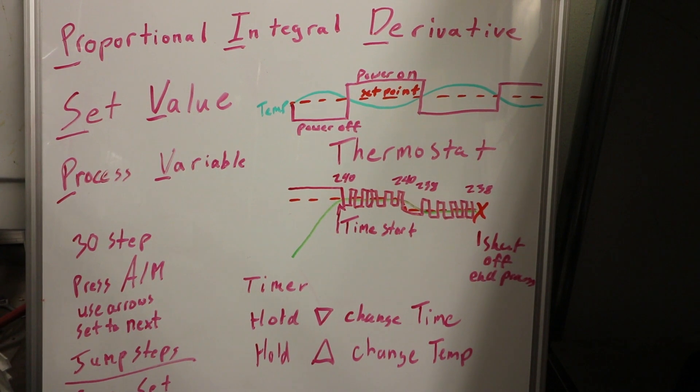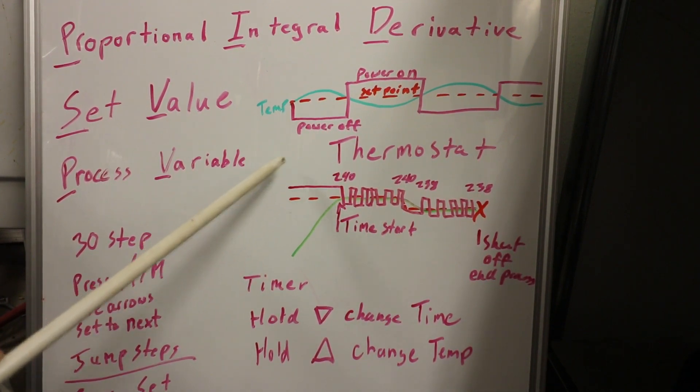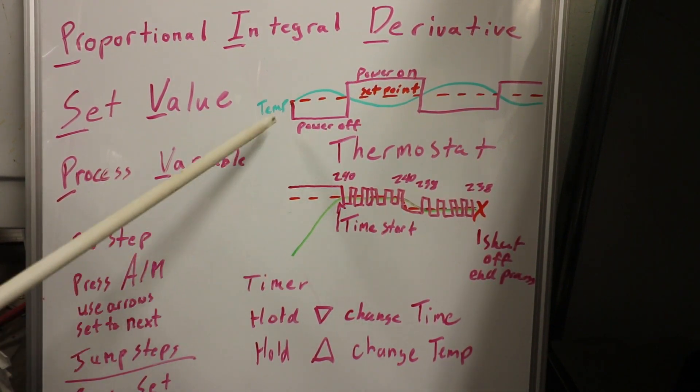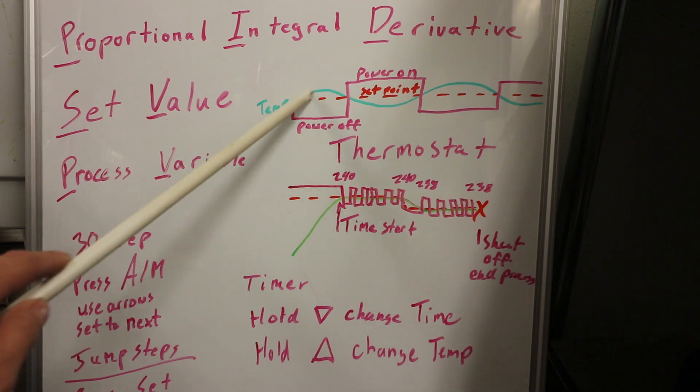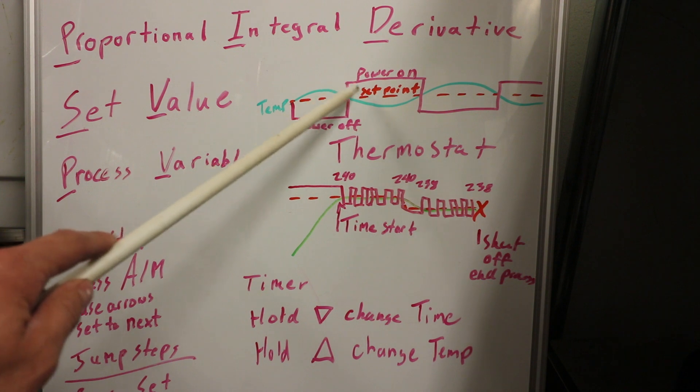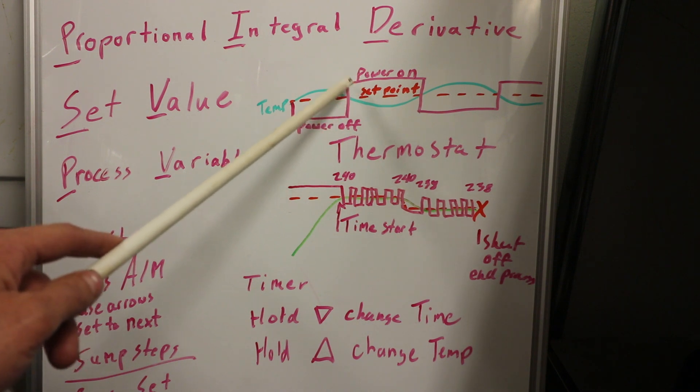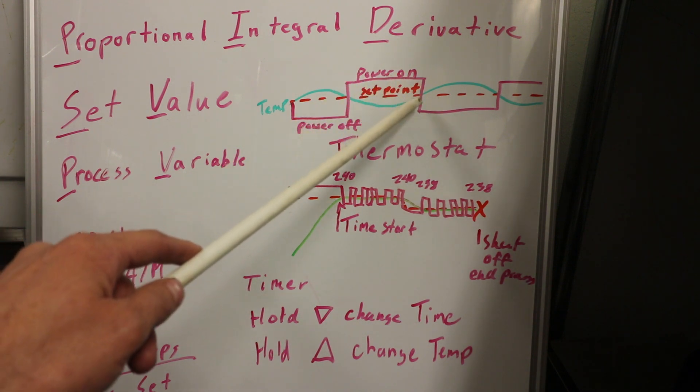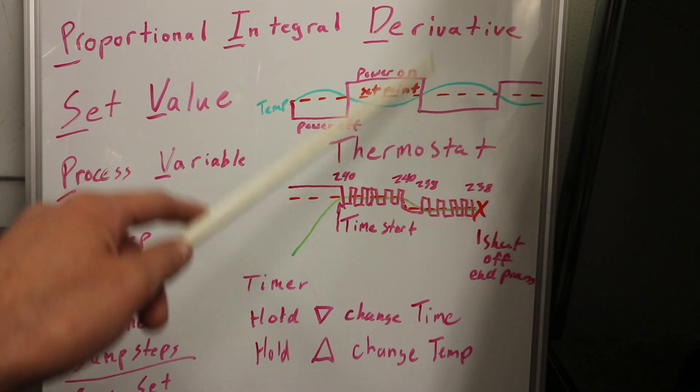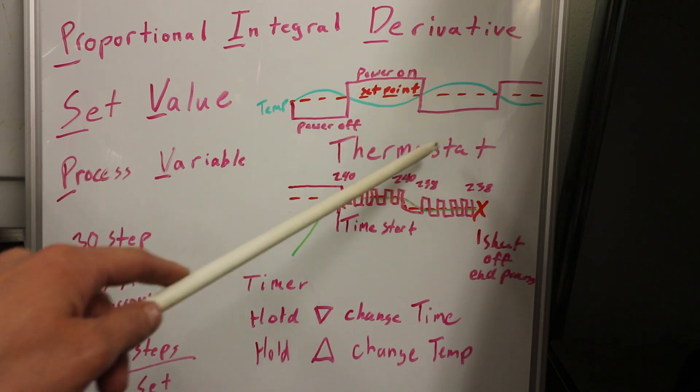Here's an example of a thermostat versus a PID controller. With a thermostat, the temperature is in green and every time it drops below the set point, it'll power on the heating or cooling source. The power source will stay on until you hit that set point again or above, and then it'll turn off.